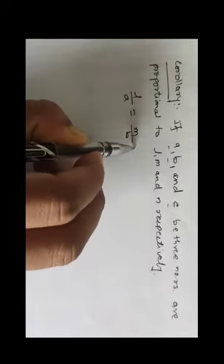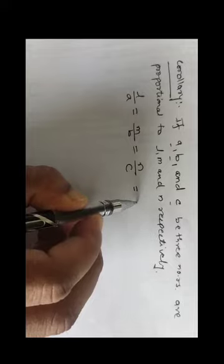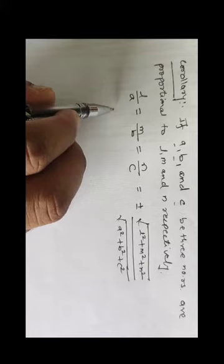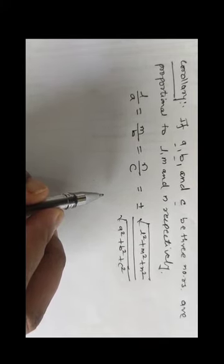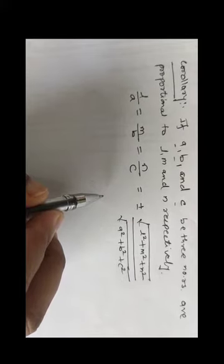Then we can write: l/a = m/b = n/c, and this can be written as ±√(l² + m² + n²) / √(a² + b² + c²). Here we used the theorem on equal ratios.